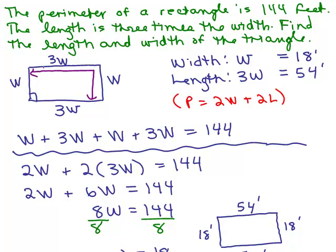But you could also go all the way around. Add all four sides to get 144, or use the formula for perimeter twice the width plus twice the length, which was right here. And no matter how you do it, we all come up with the same answer, that the width is 18 feet and that the length is 54 feet.